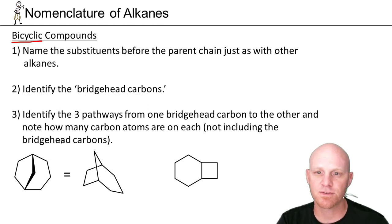So for these bicyclic compounds, the first thing you do is name the substituents just like you would any other compounds. That's not new. The big thing here, starting with rule number two, is we need to identify what are called the bridgehead carbons.